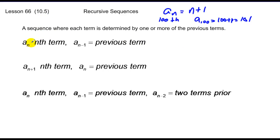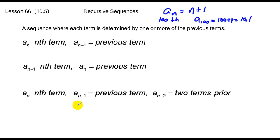A couple of expressions: a sub n talks about the nth term. If I say a sub n minus 1, that's the previous term. If we decide to make a sub n plus 1 the nth term, then the term before it is a sub n. Likewise, if a sub n is the nth term, the previous term is a sub n minus 1, and two terms before that is a sub n minus 2.